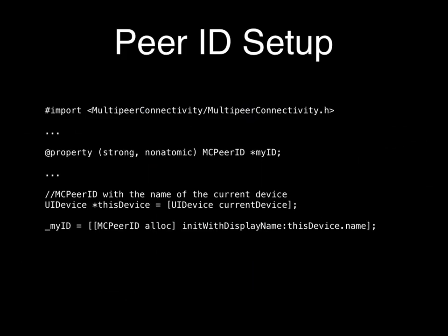Code time. The first thing you do when setting up a session is create an MC Peer ID. This identifies you as the device. You import the framework, create an instance variable for storing your MC Peer ID, and initialize it with a display name — in this case I've used the UIDevice name, which users are familiar with: 'Jan's iPhone,' 'Tim's iPhone,' whatever.